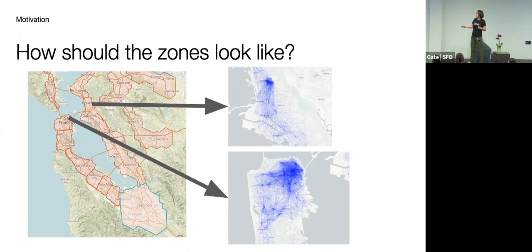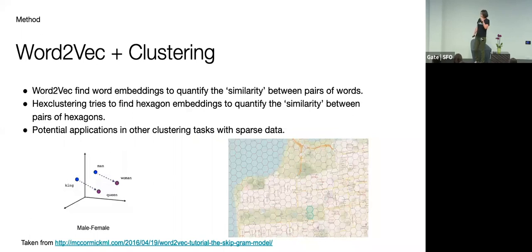But most trips are actually concentrated at the downtown area. So how do we really leverage those trips data that we have to segment a map into different zones? The answer is using Word2Vec embeddings plus hierarchical clustering. Big shout out to the driver intelligence team who are actually the very first team to apply this Word2Vec framework to this kind of hex clustering problem.